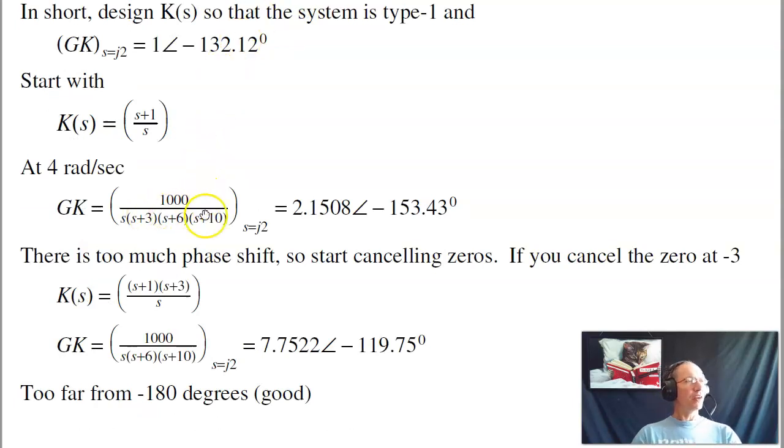If I then try this, then at 2 radians per second, g times k has a phase shift to minus 153 degrees. I want it to be minus 132, so I'm too close to minus 1. I need to add phase. And the way you add phase is you add a zero. Let's cancel the next slowest pole, pole at minus 3.